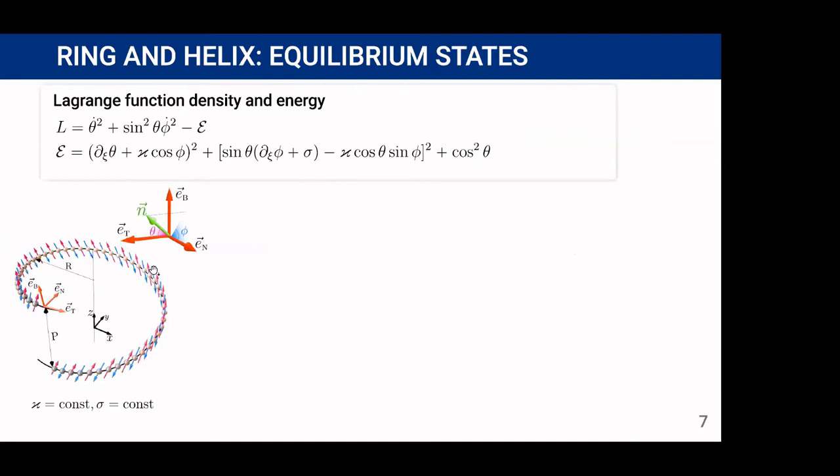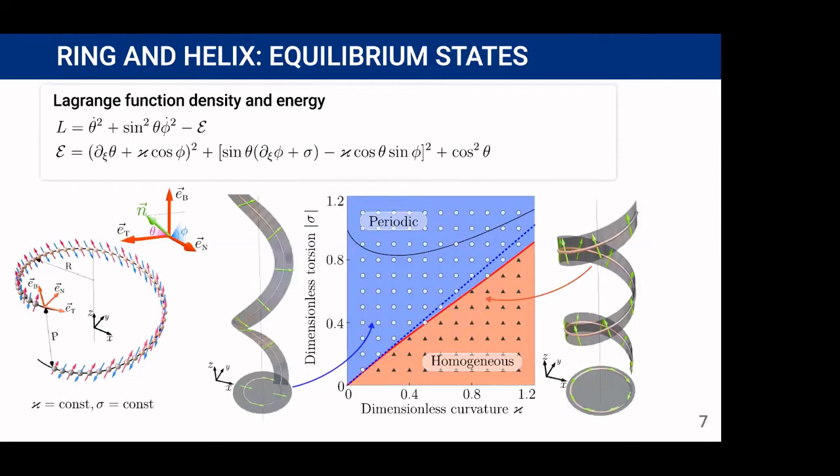Now let's proceed with the description of equilibrium states in this system. It shows that the ring has only one ground state in which the Neel vector is perpendicular to the plane of the ring, whereas helix has at least two equilibrium states: homogeneous state in which the Neel vector is tilted from the binormal direction on angle determined by curvature and torsion, and periodic state.